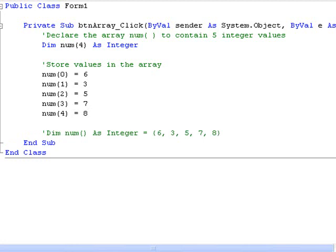In this line we don't specify the upper bound. Instead, Visual Basic will determine the size of the array based on the number of values in the brackets and it will assign the values to the elements in the order in which they appear. So 6 will be assigned to num(0), 3 to num(1) and so on.